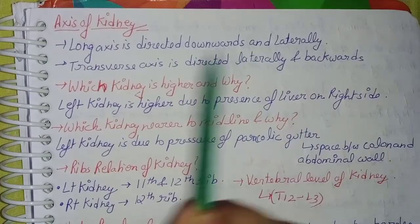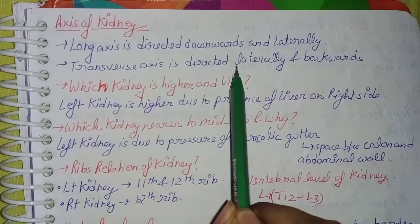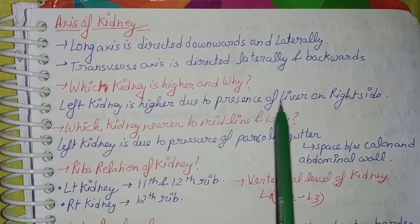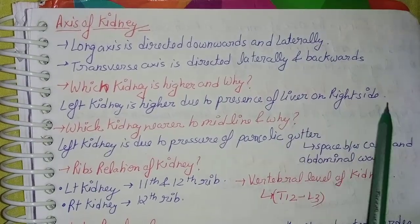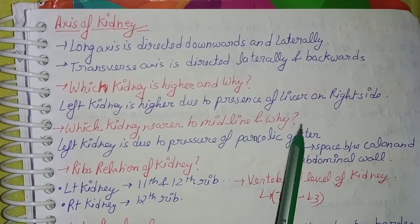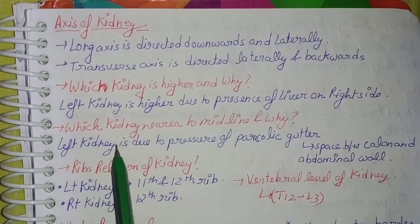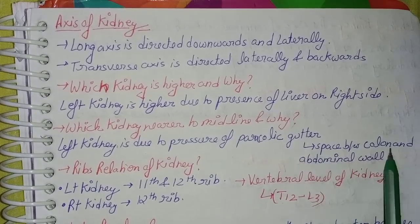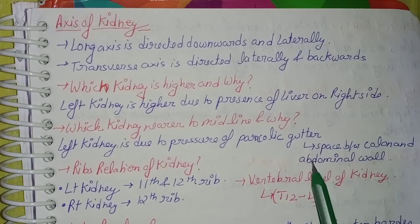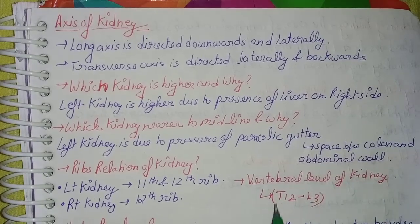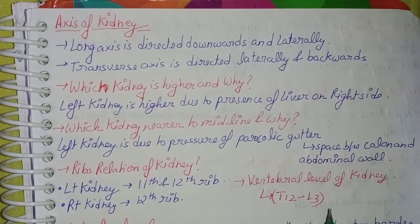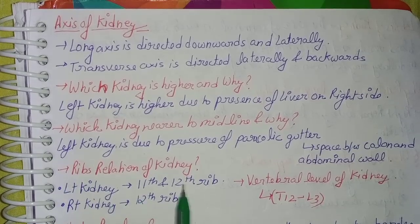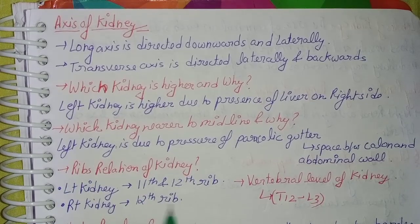Coming to the axis of the kidney: the long axis is directed downward and laterally; the transverse axis is directed laterally and downward. Which kidney is higher and why? The left kidney is higher due to the presence of the liver on the right side. Which kidney is nearer to the midline? The left kidney, due to the pressure of the paracolic gutter — the space between the colon and the abdominal wall. The vertebral level of the kidney is thoracic 12 to lumbar 3. Rib relations: the left kidney is related to the 11th and 12th ribs; the right kidney is related to the 12th rib only.